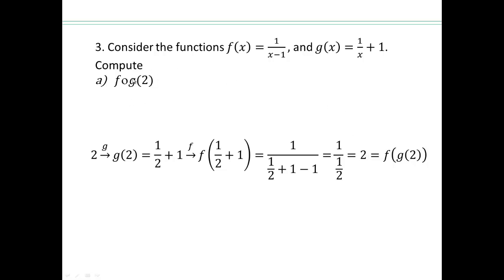Why don't you verify if that happens with all numbers? So if I put 3, 4, 5, any number, you can see any number plus 1, plus 1, minus 1 go away. 1 over that number, which was the reciprocal, will give you the original number back.